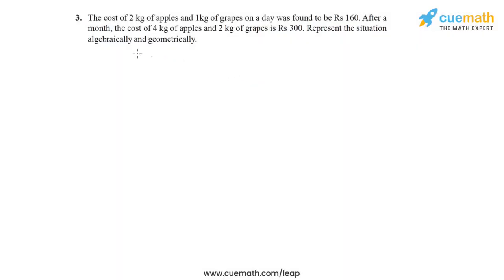Question 3 of this exercise says the cost of 2 kg of apples and 1 kg of grapes on a day was found to be 160 rupees. After a month, the cost of 4 kg of apples and 2 kg of grapes is 300 rupees. We need to represent this situation algebraically and geometrically.